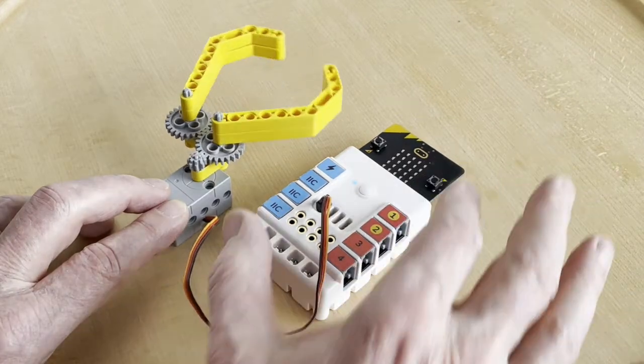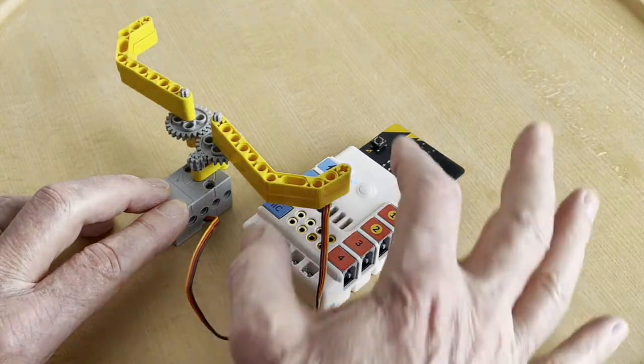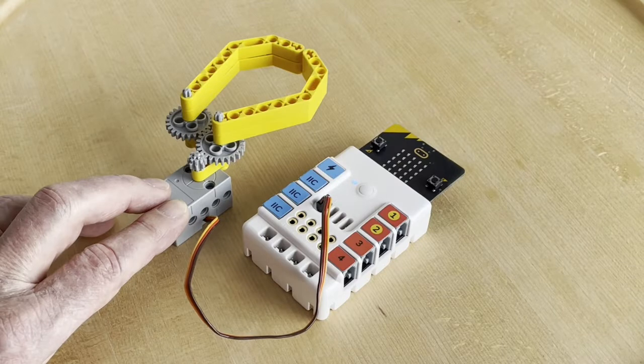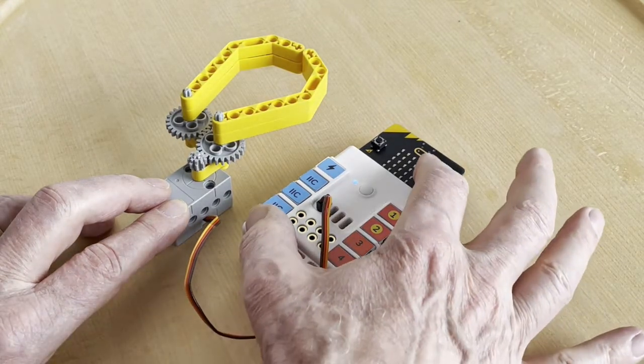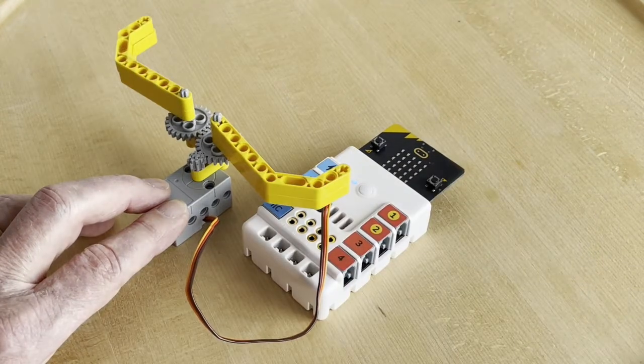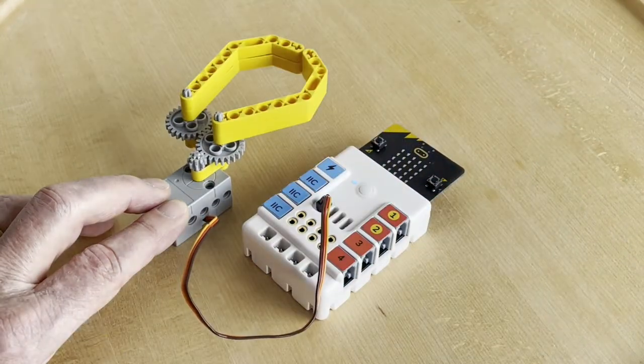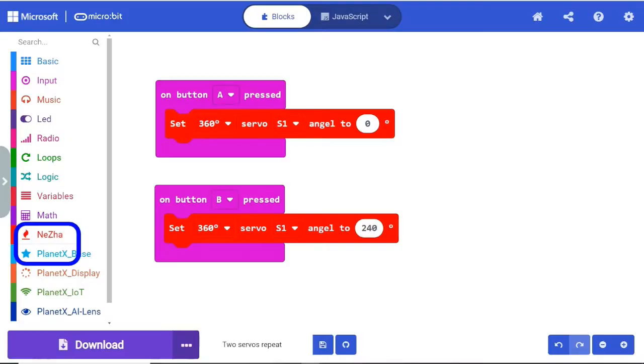We start with this grab claw which can be closed and opened with buttons A and B. The program is very simple and looks like this.